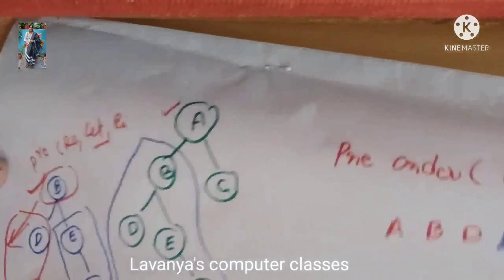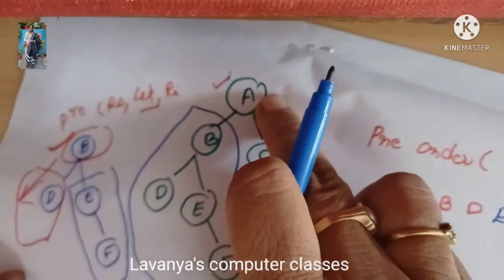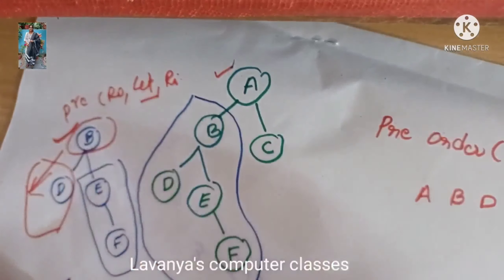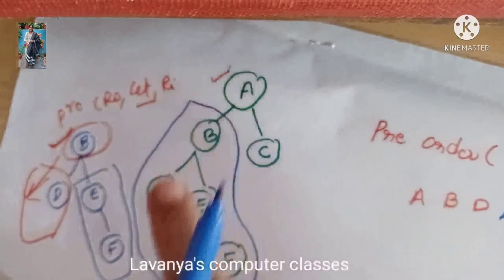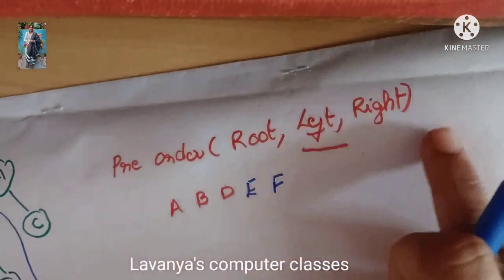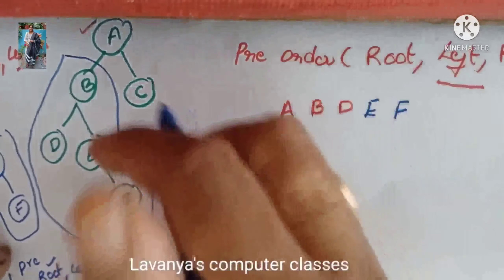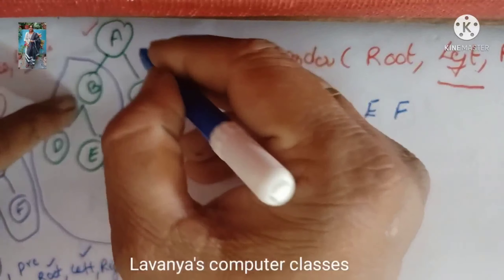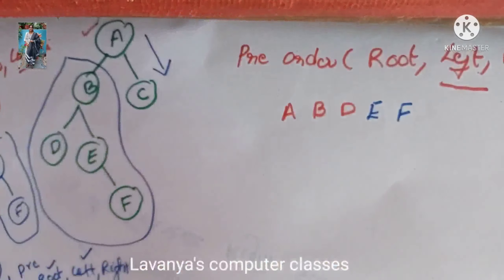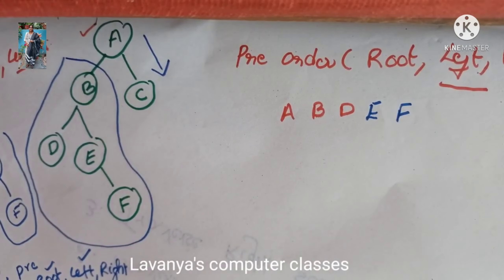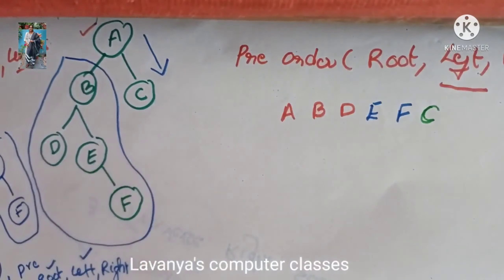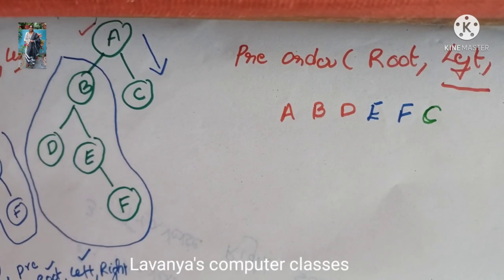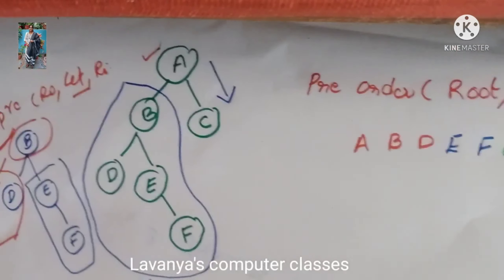Left-hand side of main root A is completely done: A, B, D, E, F. Now go to the right-hand side of A. The right-hand side is only C. So the pre-order traversal of this graph is A, B, D, E, F, C.